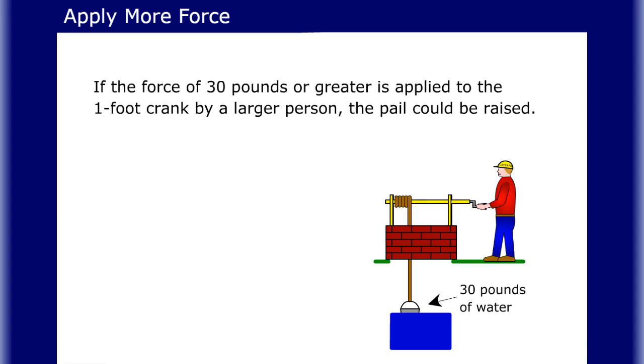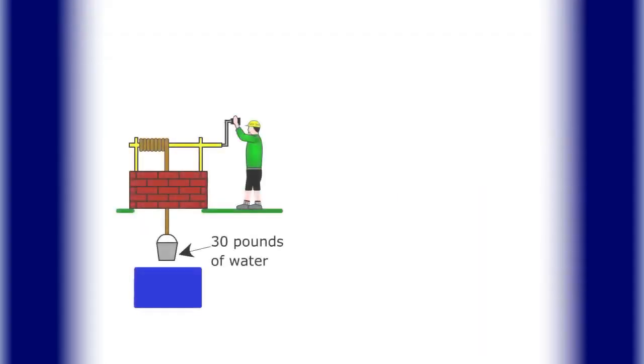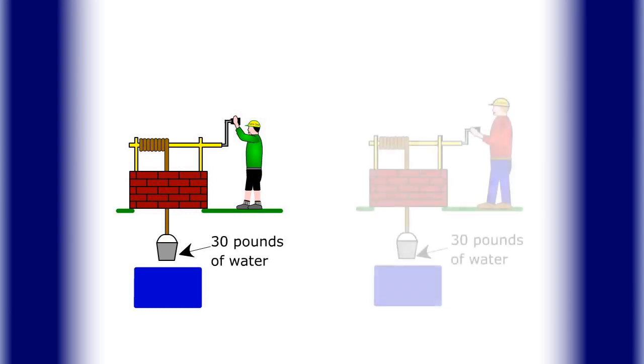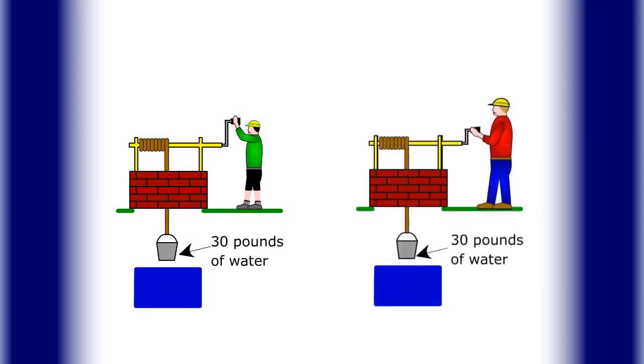If a force of 30 pounds or greater is applied to the one-foot crank by a larger person, the pail could be raised. Since torque equals force times distance, torque equals 30 pounds times one foot, which equals 30 pound-feet. So either increasing the length of the crank or applying more force to the crank would result in a torque of 30 pound-feet.